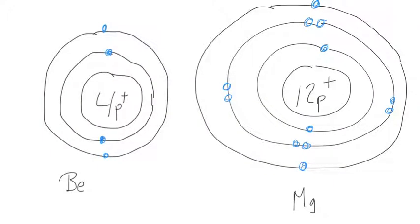As we can see, beryllium, it was in period two, so it has two shells, the inner shell being the first and the outer shell being the second.